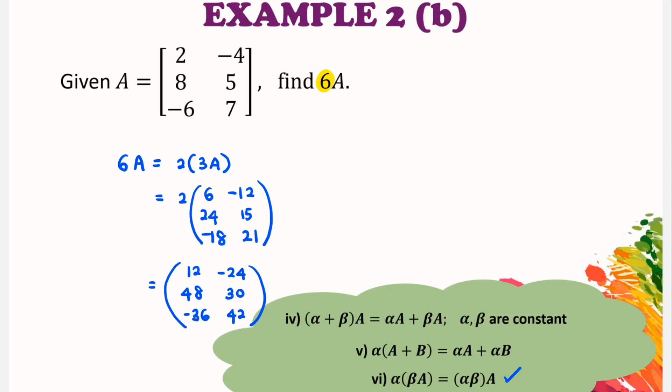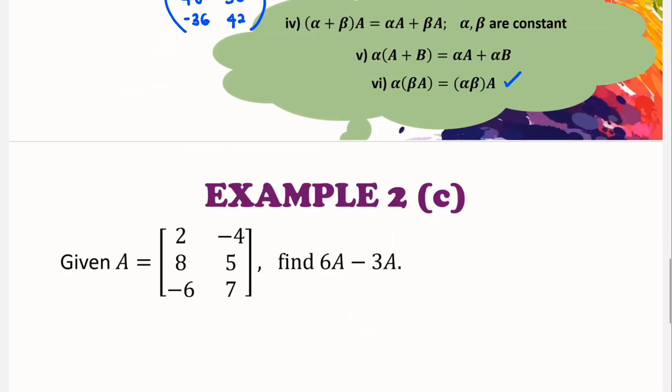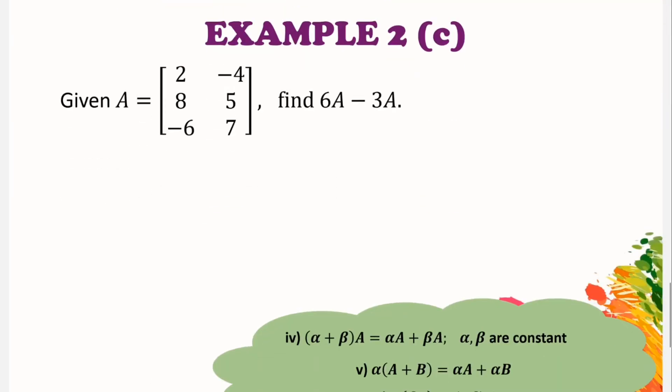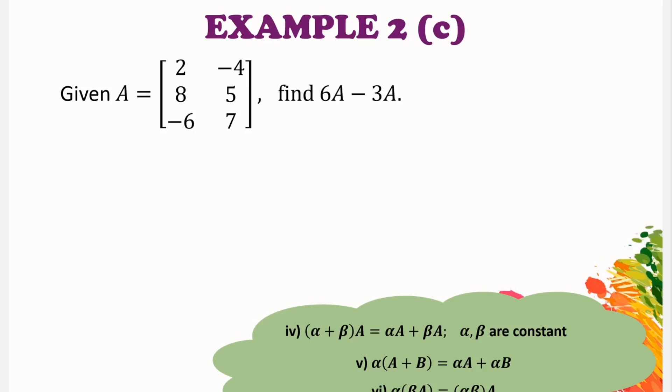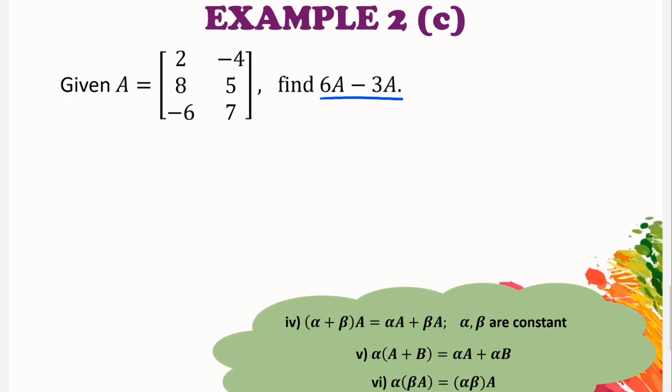So now let's move to example 2 part C. So for part C question, the simplest way to solve 6A minus 3A is actually we simplify this expression first. And then we do the operation.